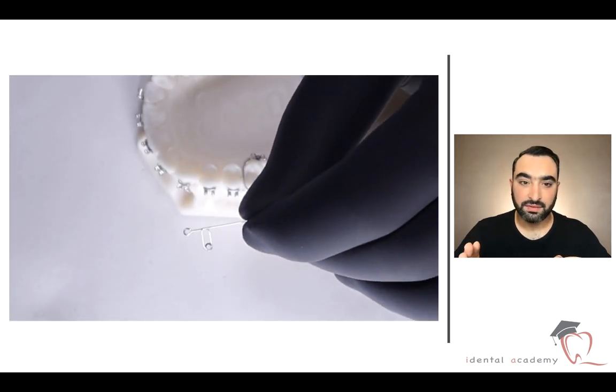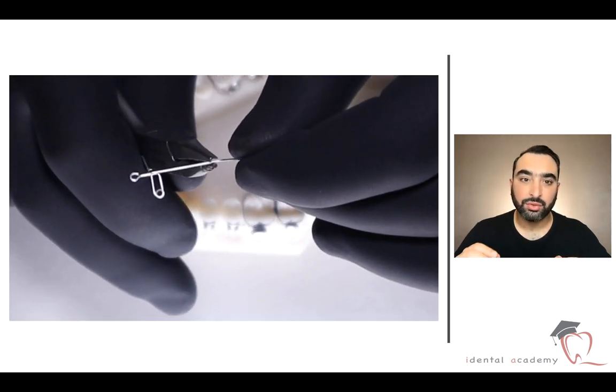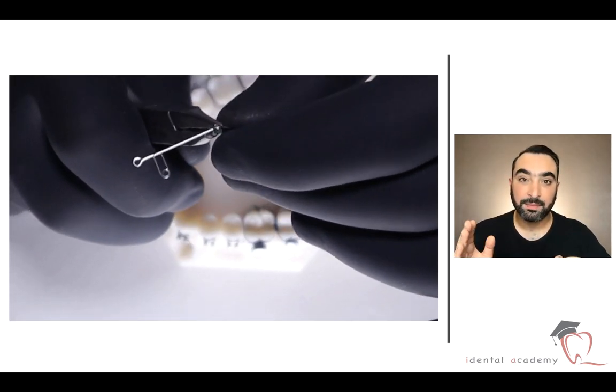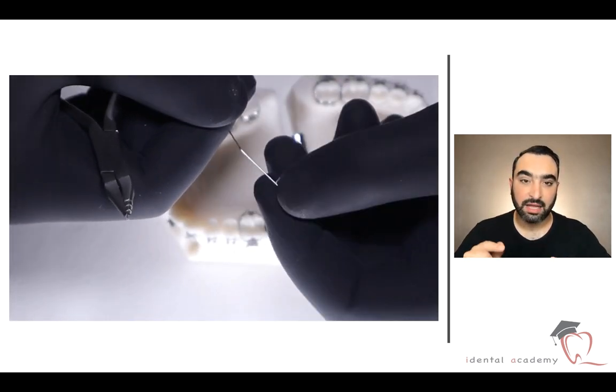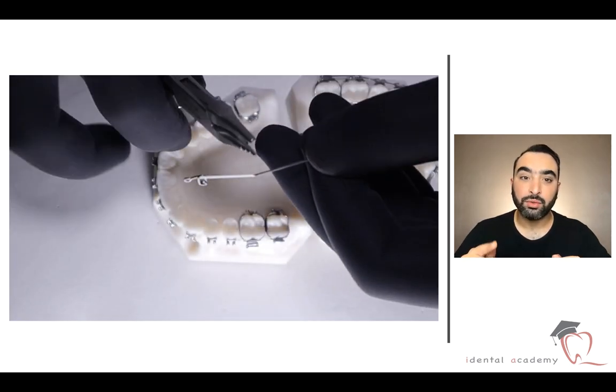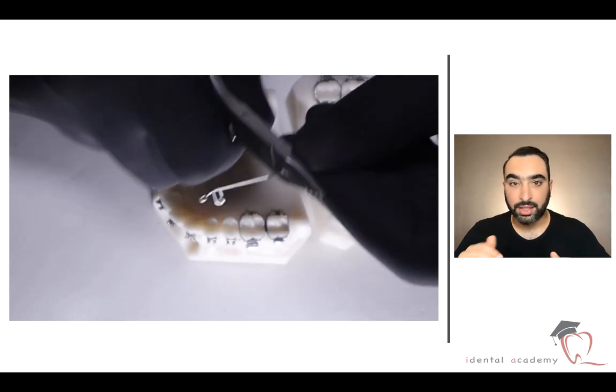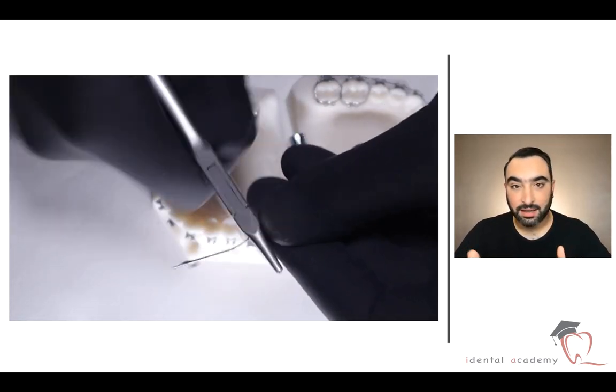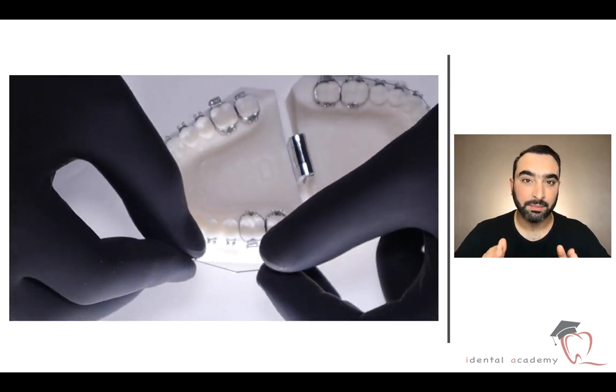The other one is tip-back, also to increase the anchorage for the molar. This is just to face the reaction forces. And for the canine also you have to make like 30 degrees to face the tipping while you are doing the distal retraction, so you will have almost bodily movement.